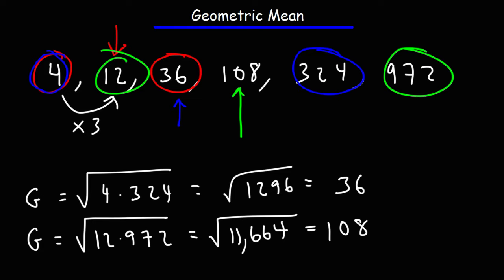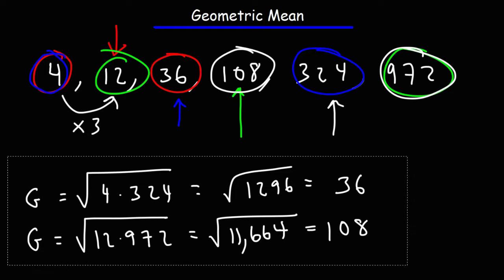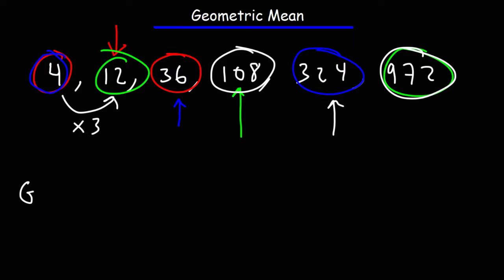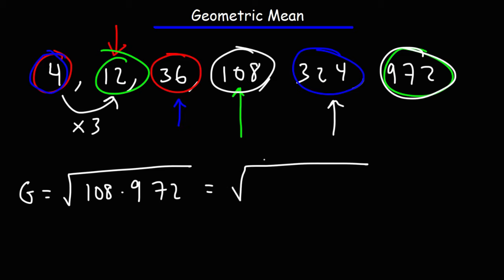Let's do one more example. Let's find the geometric mean between 108 and 972 — the answer is going to be 324. It's going to be the square root of 108 times 972. Multiplying those two numbers: 108 times 972 is 104,976. Taking the square root of that number gives us 324.